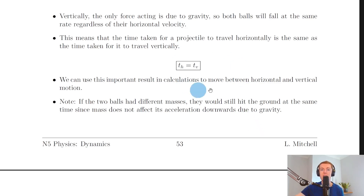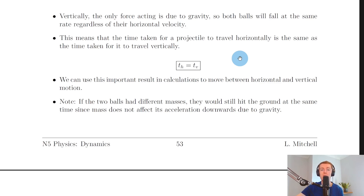To summarize: the time taken for a projectile to travel horizontally is the same as the time for it to travel vertically. The horizontal speed and the mass of the object do not affect the time taken to fall. That's all for this video — thanks for watching, give the video a thumbs up, subscribe to the channel, and I'll see you in the next one.